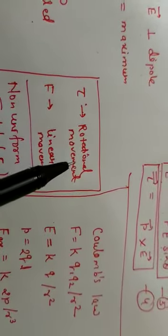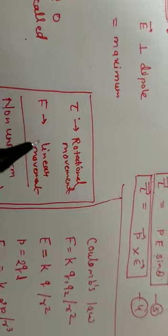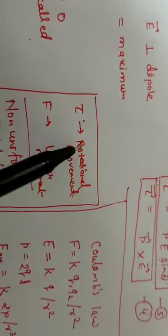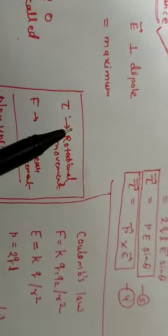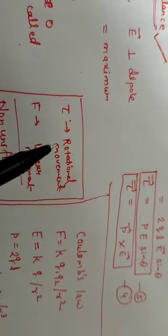When the force is there, there is linear movement. When we talk about a uniform electric field, the dipole always has only rotational movement.